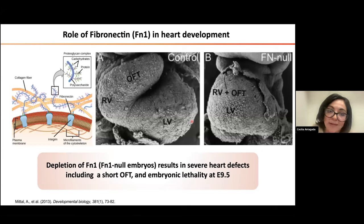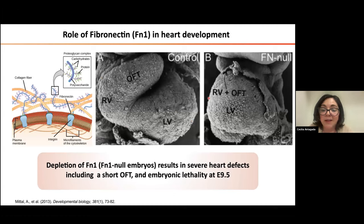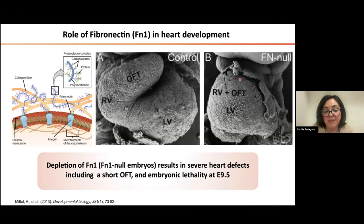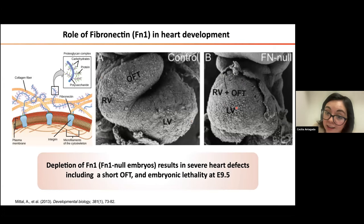When I arrived to the lab, they were trying to elucidate the role of fibronectin in heart development — an extracellular matrix protein secreted by cells — because they found that the global depletion of fibronectin results in severe heart defects, including a short outflow tract phenotype, as you can see here in this picture, and embryonic lethality at early development at E9.5.